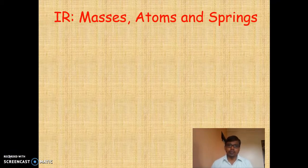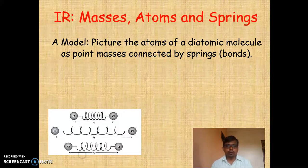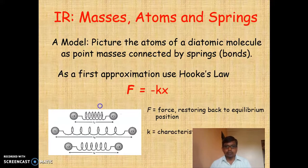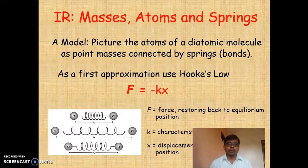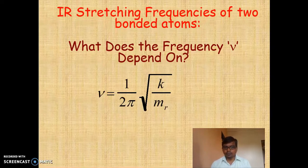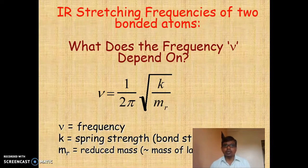According to Hooke's law, the vibrational frequency is directly proportional to the strength of the bond, and inversely proportional to the reduced mass. For stretching vibration, more vibrational frequency is required, while for bending vibration, less vibrational frequency is required. If the mass is greater, obviously less vibrational frequency is required, and if the strength is greater, more vibrational frequency is required.